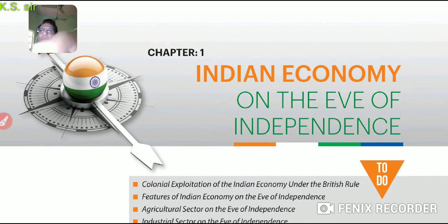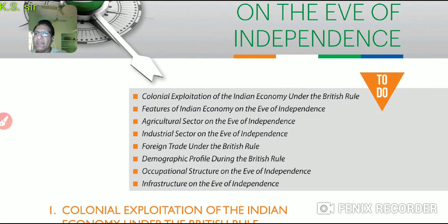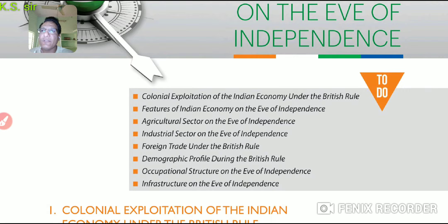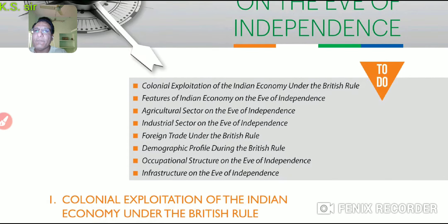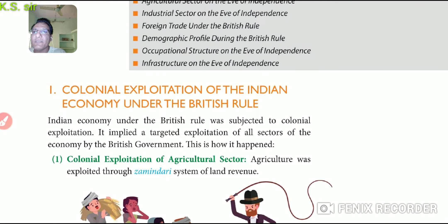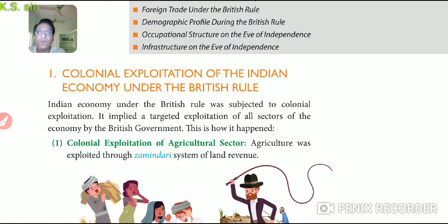The points we will cover in this chapter are listed here so you can study them one by one. First, we will study about the condition of Indian agriculture and other things, to conclude what was the condition of Indian agriculture at the time of British rule. This is an important question given in the CBSE books. We will complete two to three main questions along with many short questions in this video.